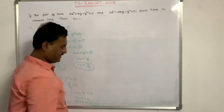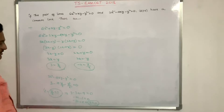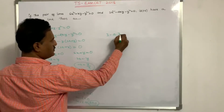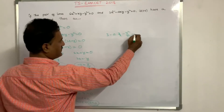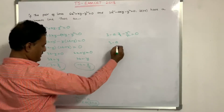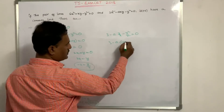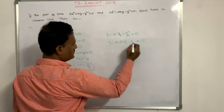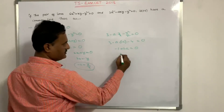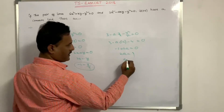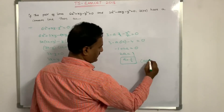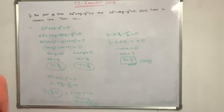Now substituting y/x = −2: 3 − A(−2) − (−2)² = 0, giving 3 + 2A − 4 = 0, so −1 + 2A = 0, hence 2A = 1 and A = 1/2. Since A > 0, the value of A is 1/2.